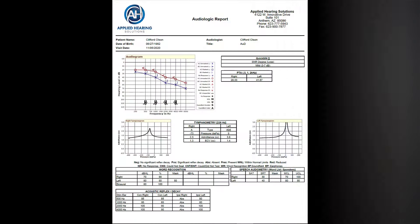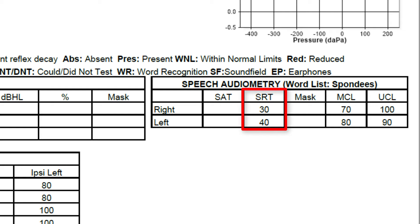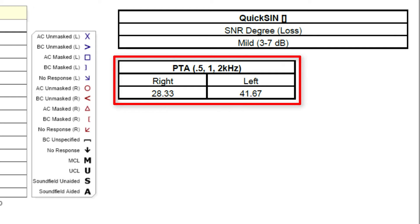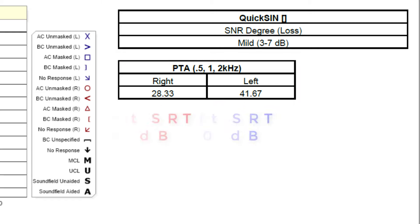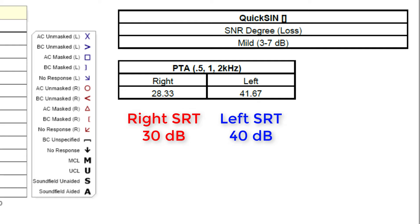At this point you should have a good understanding of the audiogram portion of your hearing test. So let's go ahead and move on to speech reception thresholds, otherwise known as SRTs. SRTs are often indicated in your speech audiometry section on your hearing test. The SRTs are in decibels and show the softest level in which you can understand speech 50% of the time. These numbers are used by your hearing care professional to compare to your pure tone averages, which are the 500, 1000, and 2000 hertz average of your air conduction thresholds in each ear. We would expect your pure tone averages and your SRTs to be fairly close together. For instance, on this hearing test, the pure tone average for the right ear is 28.33 decibels, and the SRT for the right ear is 30 decibels, which is very close to 28.33, and helps to verify that we are obtaining an accurate hearing assessment.